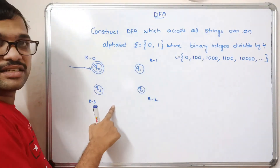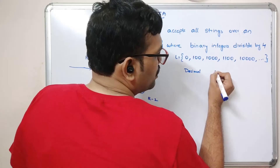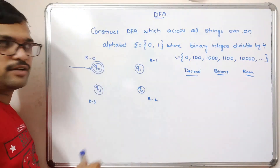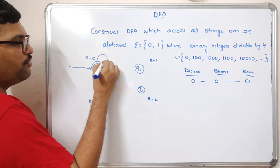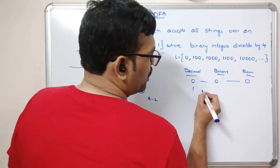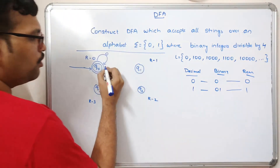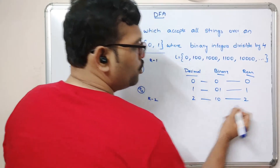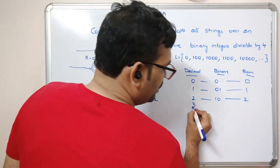Using the same procedure — decimal, binary equivalent, and remainder — let us build transitions. Decimal 0, binary 0, remainder 0: Q0 on 0 stays at Q0 (self-loop). Decimal 1, binary 01, remainder 1: Q0 on 1 goes to Q1. Decimal 2, binary 10, remainder 2: Q1 on 0 goes to Q2. Decimal 3, binary 11, remainder 3: Q1 on 1 goes to Q3.